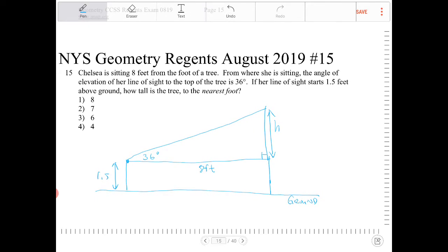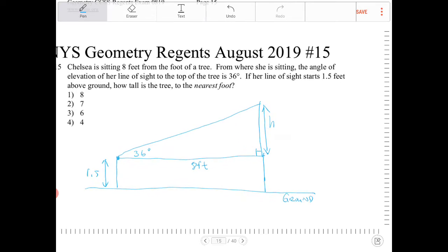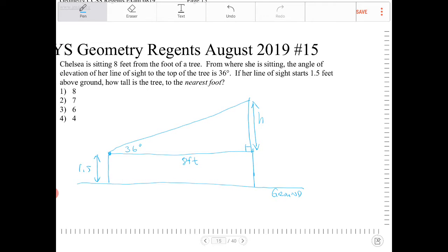So looking at this, H is opposite of 36, and 8 is adjacent to 36. So the trig ratio that we're going to use will be tangent. So tangent of 36 is equal to H over 8. Now I can solve for H: H will equal 8 tangent 36.